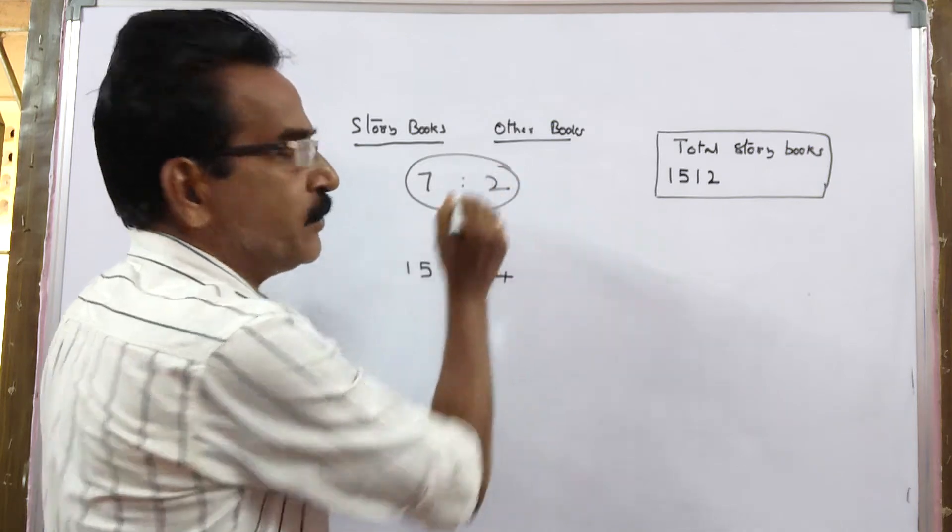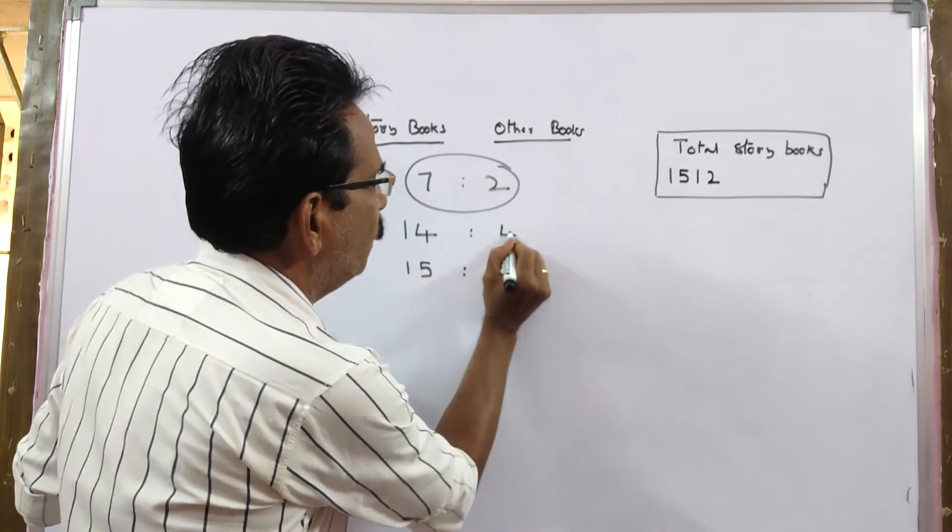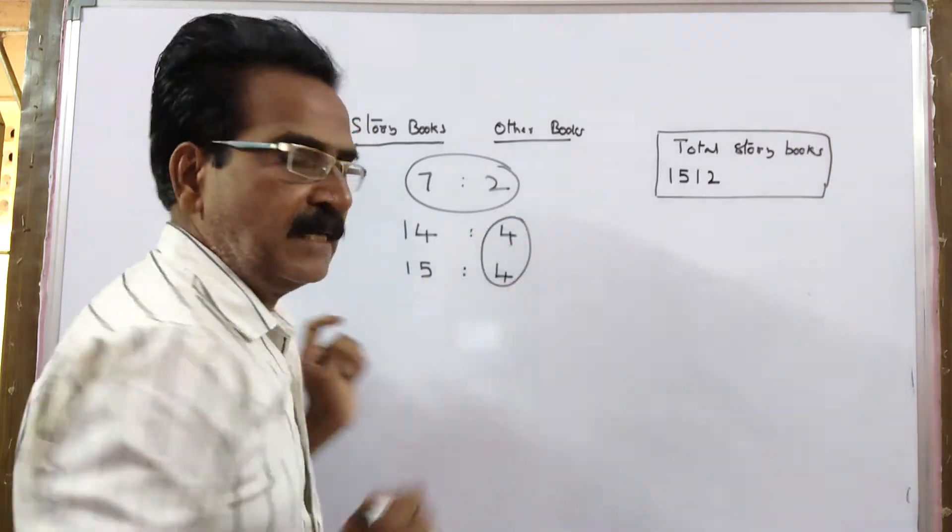I am multiplying this ratio by 2 to 7 is 14 to 2 is 4. Now, this part is made equal.